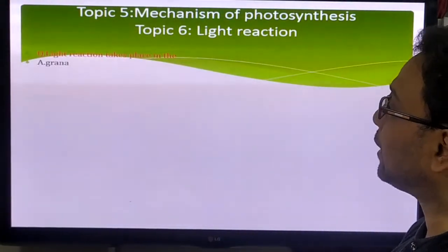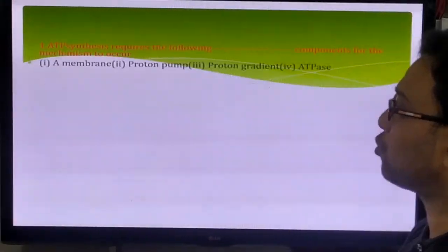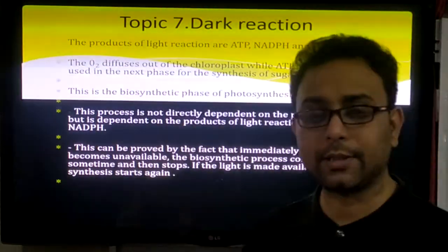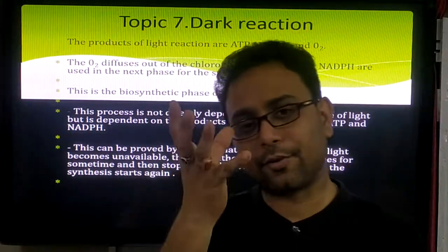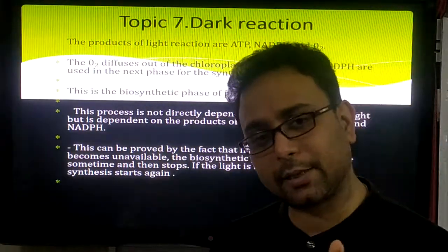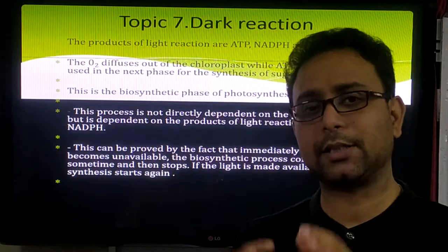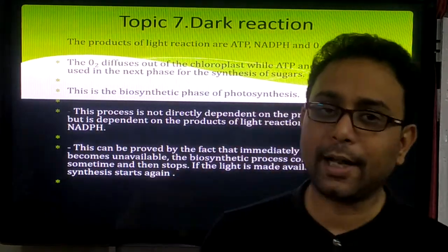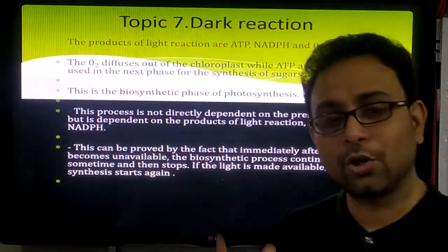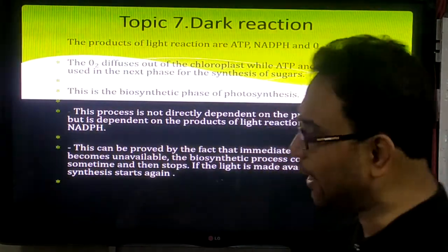In the dark reaction, which takes place inside the stroma, carbon dioxide is trapped. The ATP and NADPH produced in the light reaction are utilized in this process in the presence of carbon dioxide, and finally we get the main product — glucose. So these are the two steps: light reaction and dark reaction.